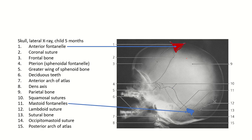This is the lateral X-ray of the skull — a 5-month-old child's X-ray — and you can see the anterior fontanelle and the mastoid fontanelle are still present, but the posterior fontanelle and the sphenoidal fontanelle are closed.